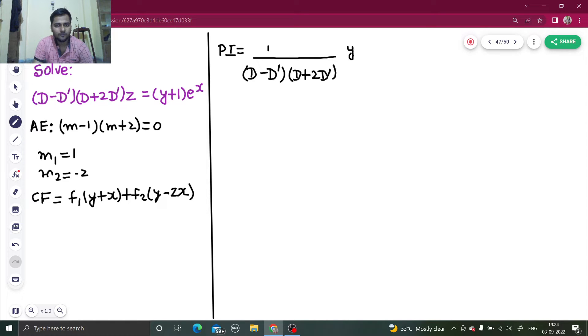Particular integral is 1 upon (d minus d dash)(d plus 2d dash) operating on (y plus 1)e^x. Because this does not belong to e^(x plus by) or sin or cos x plus ax plus by or any polynomial, here we will use the general method to find the particular integral.